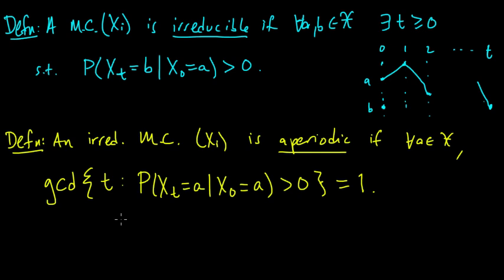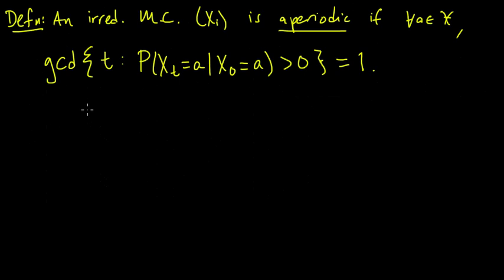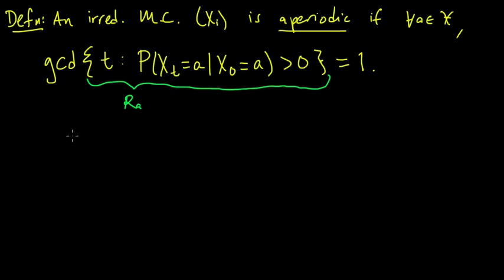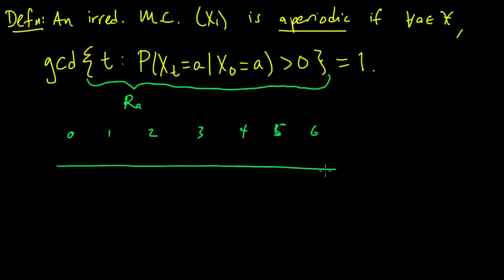Let's break this down. Define the set R_A to be this set of times — it depends on the state A. These are all the times where, starting out at A, we can return to A again with some positive probability. So on the number line of times 0, 1, 2, 3, 4, 5, etc., we mark a dot wherever we can return to A with positive probability — maybe at 2, 3, 5, 7, and so on. Those are all the times in the set R_A.